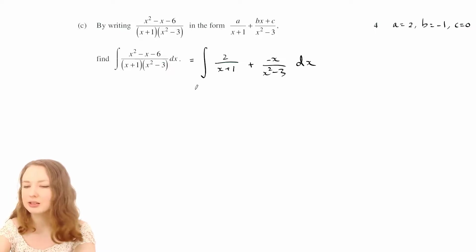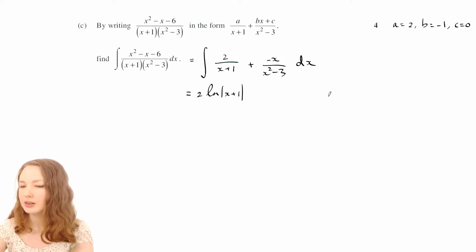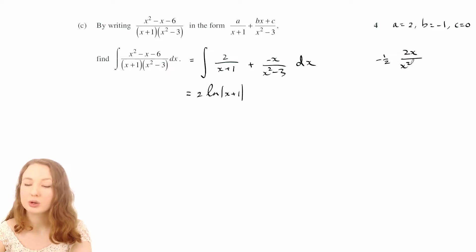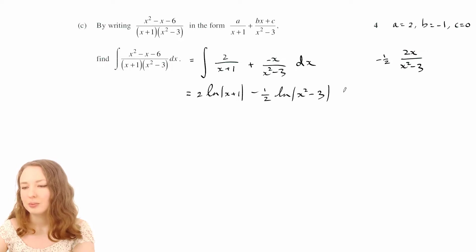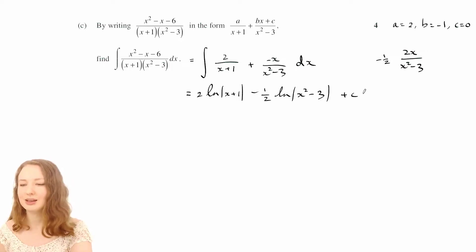Okay, and now these we can integrate quite easily. So this is 2 ln of x plus 1. And then this one you can think of as being negative half times 2x over x squared minus 3, so that the numerator is the derivative of the denominator. And then that allows you to say that it's negative half ln of x squared minus 3 plus a constant. And that's it.